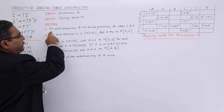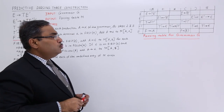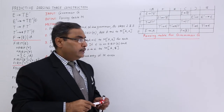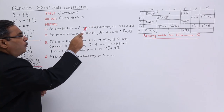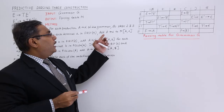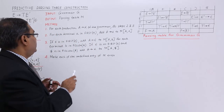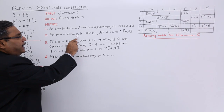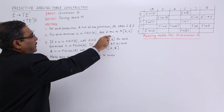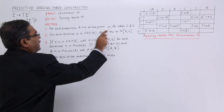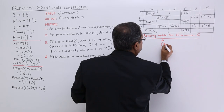For each production A produces alpha of the grammar, do steps 2 and 3. That means, for all the productions in this particular grammar, we are going to execute step 2 and step 3. For each terminal A in first of alpha, add A produces alpha to M[A, a]. This is my parsing table and I am giving this name as M.